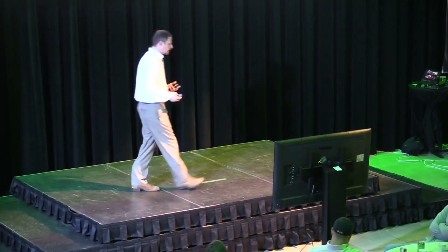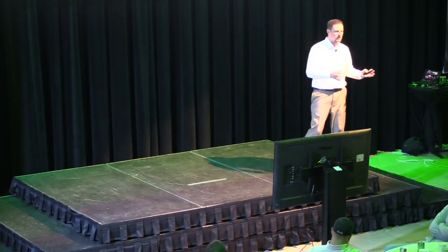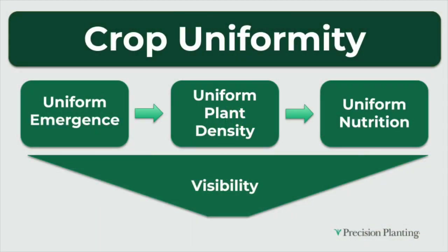I'm trying to understand what's the easiest way to communicate the goals of what we're trying to do. Regardless of equipment, whether it's a seeder or a row crop planter, my goal for that equipment is crop uniformity. That's kind of an umbrella term — painting it with the easy button. So I want to break it down one more step: uniformity of emergence, then plant density, and then uniform nutrition and visibility.